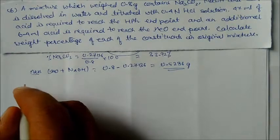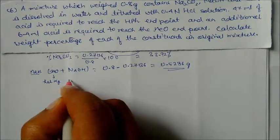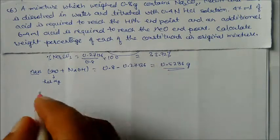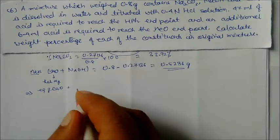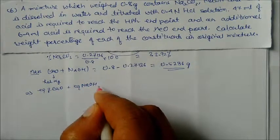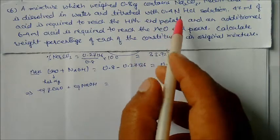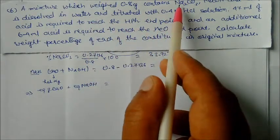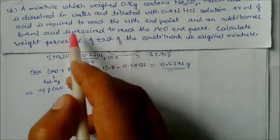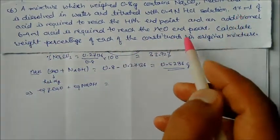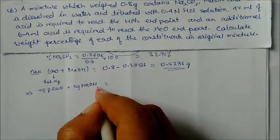Let x grams be calcium oxide, so (0.5286 − x) grams is sodium hydroxide. The total equivalents of CaO plus NaOH equal the milliequivalents of HCl reacted at the phenolphthalein end point minus those at the methyl orange end point. So: equivalents of CaO + equivalents of NaOH = milliequivalents HCl (phenolphthalein) − milliequivalents HCl (methyl orange).